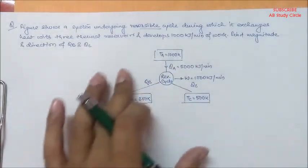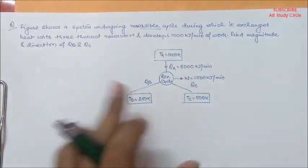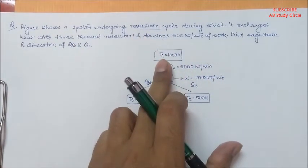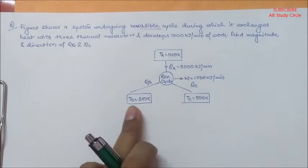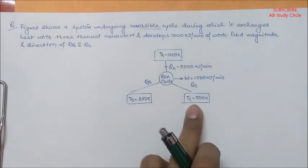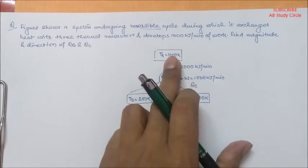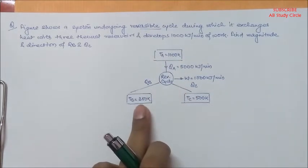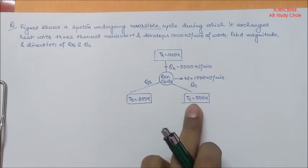The whole question is summarized with the help of this figure. This is the thermal reservoir maintained at temperature TA, this is the thermal reservoir maintained at temperature TB, and this is the thermal reservoir maintained at temperature TC. Where TA is 1000 K, TB is 300 K, and TC is 500 K.